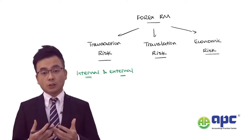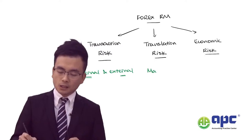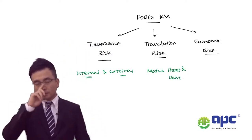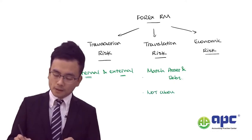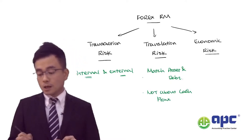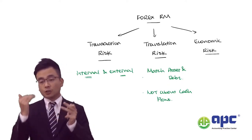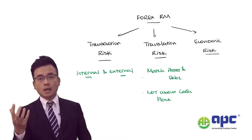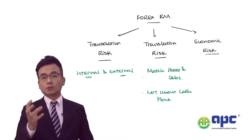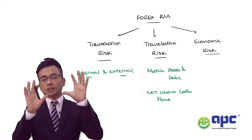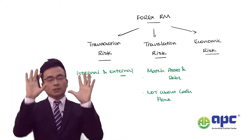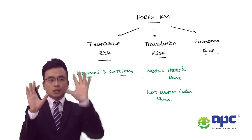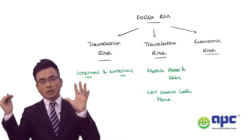The way we manage translation risk is different — all we can do is match the foreign currency asset with the foreign currency debt altogether. Translation risk is not about cash flows at all. If the forex rate changes, resulting in more liabilities, at the same time it results in more assets. Assets minus liabilities equals equity — so an increase in both asset and liability keeps equity the same.